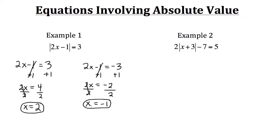We can always double check these to make sure they're correct. When x is 2, we plug that into our original equation. We have the absolute value of 2 times 2 minus 1, and that should equal 3. So 2 times 2 is 4, and 4 minus 1 is 3. The absolute value of 3 is 3 — so that checks out.